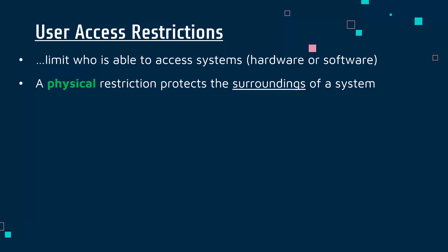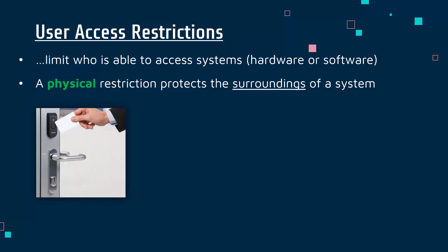Looking at physical restrictions, these are measures which protect the surroundings of the system. They're really focused on stopping unauthorized users accessing our hardware. You don't want somebody just walking into your office or school and being able to access all the laptops and all the data. You want to have physical protections as well as logical ones, which will be covered in the next video.